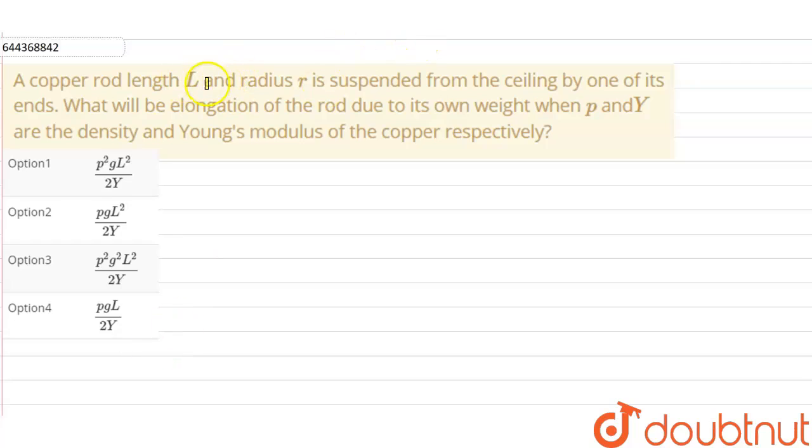A copper rod of length L and radius r is suspended from the ceiling by one of its ends. What will be the elongation of the rod due to its own weight when ρ and Y are the density and Young's modulus of the copper respectively?